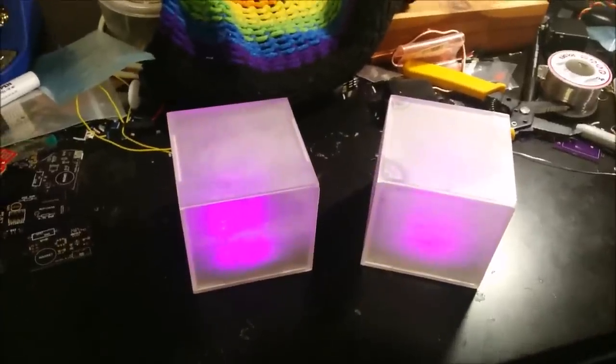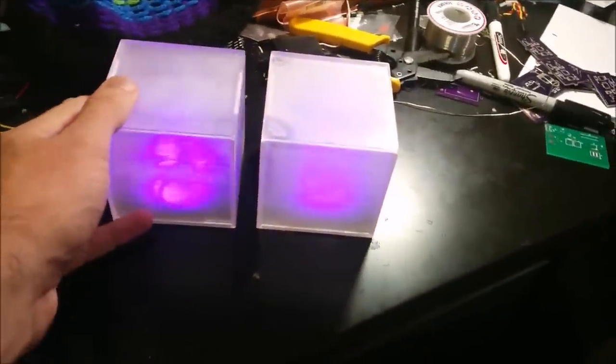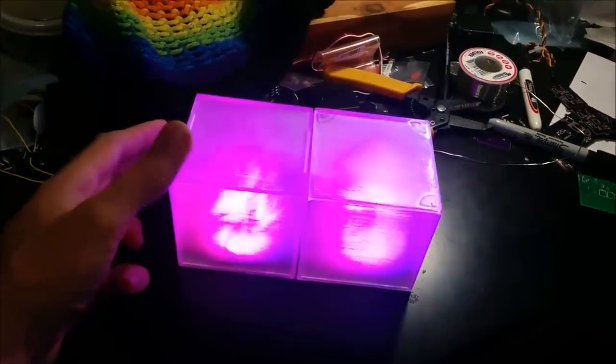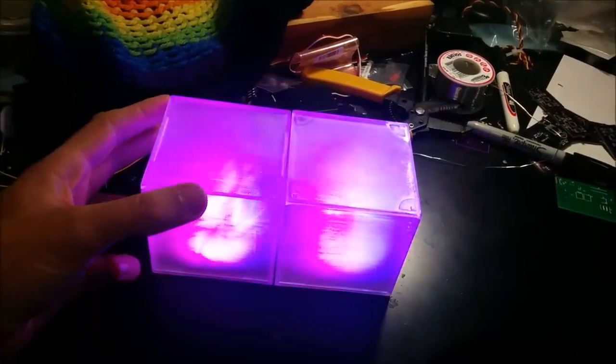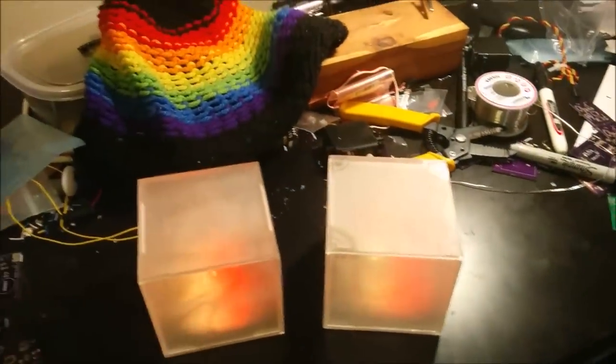So I built these cubes. They each change color randomly. When you touch them together like so, they connect magnetically and start glowing very brightly. When you take them apart, they will have synchronized color.